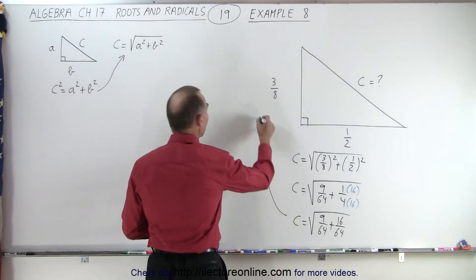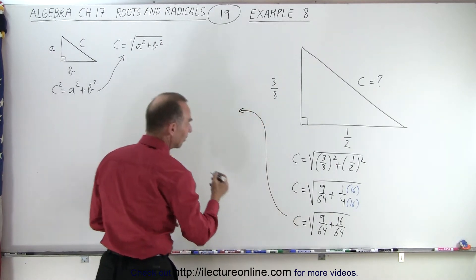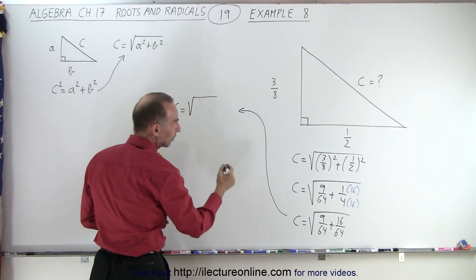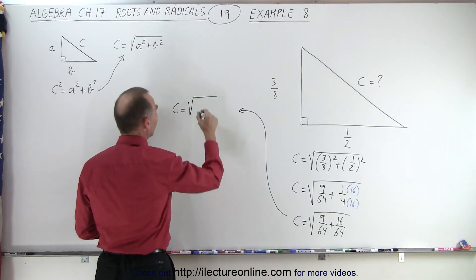So next, I go ahead and add the two fractions, and now they have the same denominator. So c is equal to the square root of 9 over 64 plus 16 over 64, which is 25 over 64.